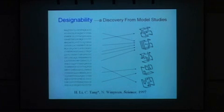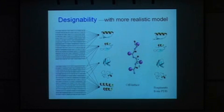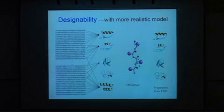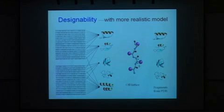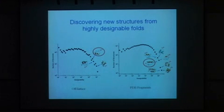Ten years ago, they only used a lattice model. If we want to design real protein structures, we should go beyond the lattice model. So recently, we collaborated on this project and went further with a more realistic model. We use three dihedral angles to reproduce the protein backbone structure, and we extract fragments from the protein data bank to calculate the designability of all fragments. For the designability calculations, we need to enumerate all possible structures, so currently we only work with small proteins of around 30 amino acid residues.